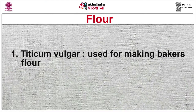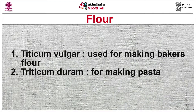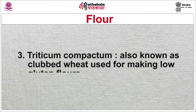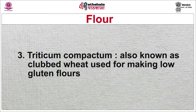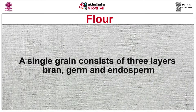Wheat is a member of the grass family and is botanically named as Triticum. Commercially, wheat is classified into three broad sections: Triticum vulgare, used for making baker's flour; Triticum durum, for making pastas; and Triticum compactum, also known as clubbed wheat, used for making low-gluten flours. A single grain consists of three layers: bran, germ and endosperm.